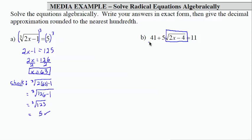So the first thing we're going to need to do is to subtract 41 from both sides. So I end up with 5 times the square root of 2x minus 4 equals negative 30.